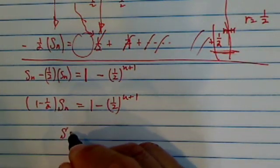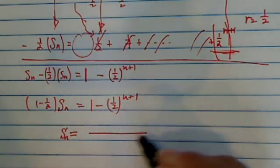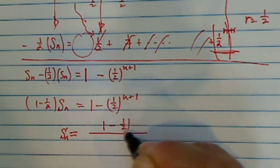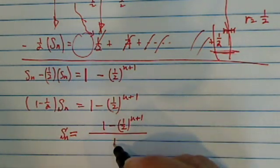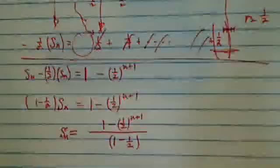Sn is our original sum. So Sn is equal to (1 - (1/2)^(n+1))/(1 - 1/2). Okay?